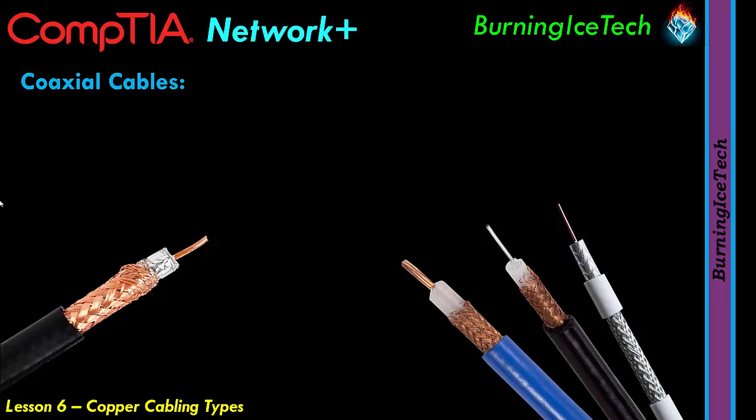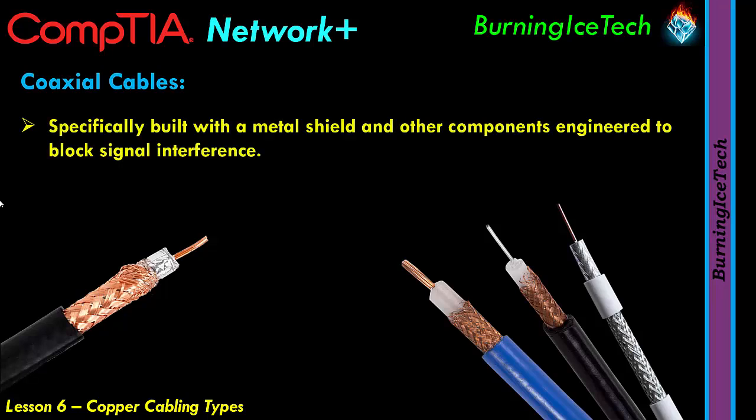Coaxial cables are specifically built with a metal shield and other components engineered to block signal interference. Looking at the pictures — it's got a solid core, normally copper in the old days, with plastic around that core, then a shield, then copper braiding, and then the outer coating. Nowadays it's actually more common to find a steel core instead of a copper core because copper is very expensive. Even the braiding is often steel rather than copper. A fancier cable might have a steel core with copper plating around it — not a solid copper core.